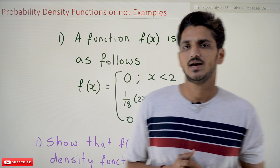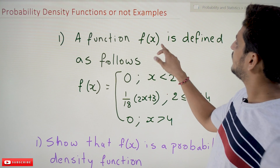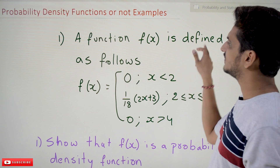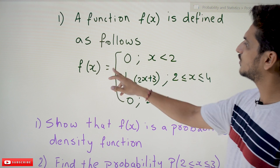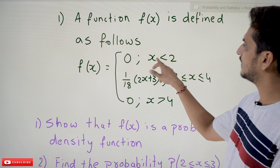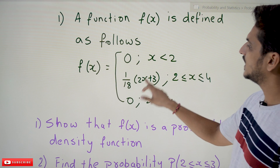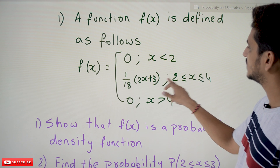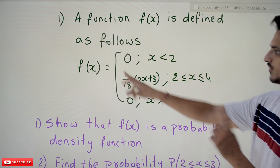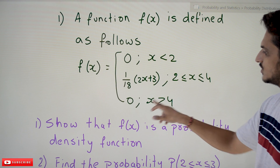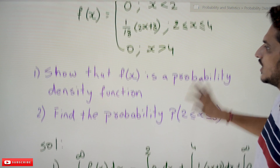Coming to today's example: a function f(x) is defined as follows — f(x) = 0 if x < 2; f(x) = (1/18)(2x + 3) if x is between 2 and 4; and f(x) = 0 if x > 4.